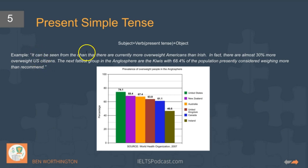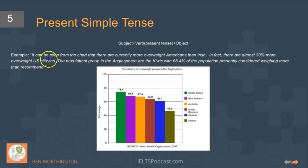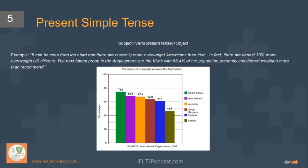'You can see from the chart that there are currently more overweight Americans than Irish.' There are almost 30% more overweight US citizens. The fattest group in the Anglosphere are the Kiwis with 68.4% of the population presently considered weighing more than what is recommended.